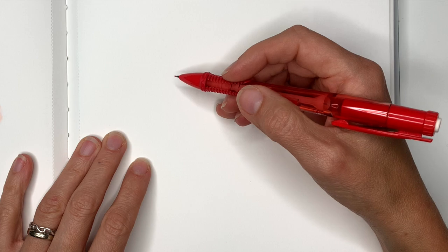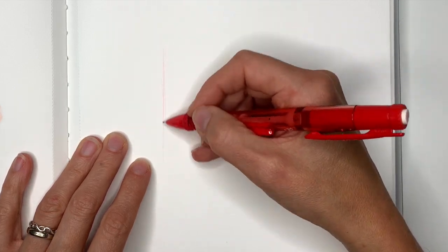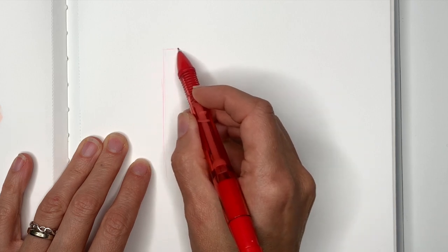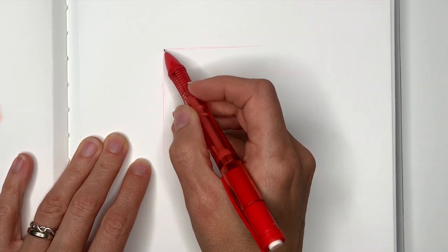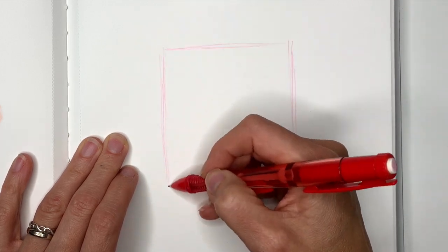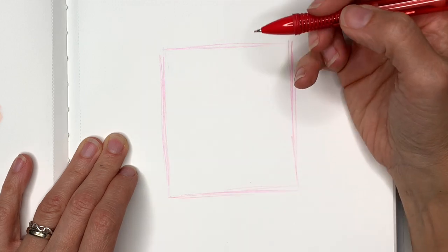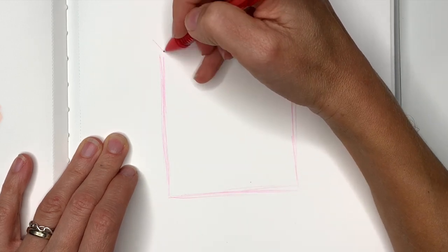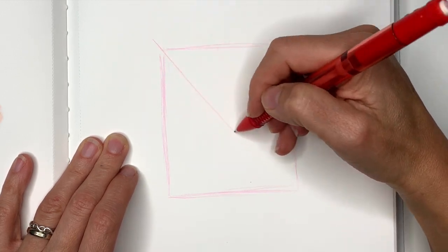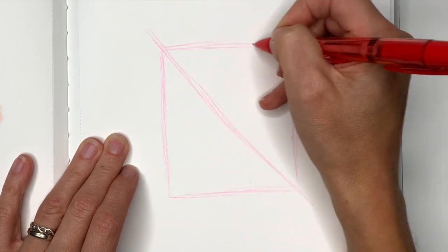I'm going to begin by drawing a rectangle. You can use a ruler for this or you can just wing it like I am. This will be like a frame for where our butterfly goes and it will help us figure out where everything goes. We're going to divide our rectangle with a diagonal line like so. Draw your line lightly because we'll erase them later.